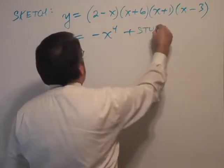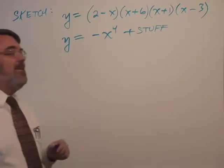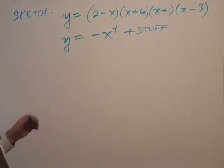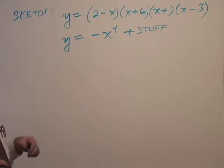And it's a 4th degree polynomial. And again, I'm not interested in knowing everything here. All those other terms won't help me. So I just call it minus x to the 4th plus stuff. As we all know, stuff happens.